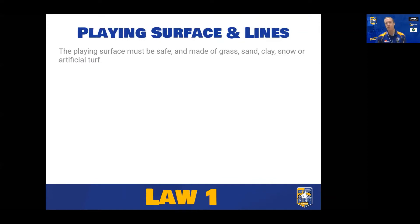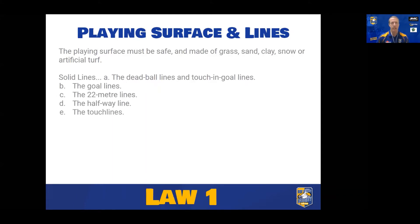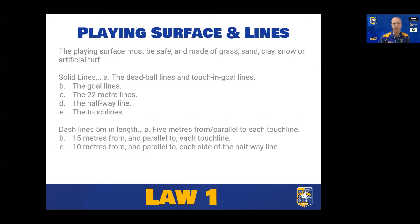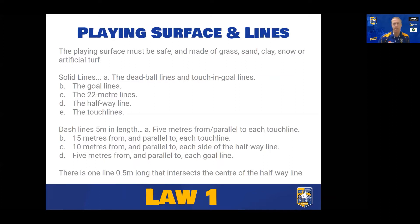The playing surface must be safe. It can be grass, sand, clay, snow, or artificial turf, which must be approved by World Rugby. There are solid lines — dead ball, touch-in-goal lines, goal lines, 22-metre lines, halfway, and touch lines. Dash lines — each dash is 5 metres in length, which is handy as a referee to measure distances, particularly for players needing to be back 5 or 10 metres at scrums or lineouts. Dash lines are 5 metres from each touch line, 15 metres from each touch line, 10 metres from each side of halfway, and 5 metres from each goal line. There's also a half-metre line intersecting the centre of halfway, denoting where kick-offs are meant to be taken from — you'll mostly see this at first-class level.